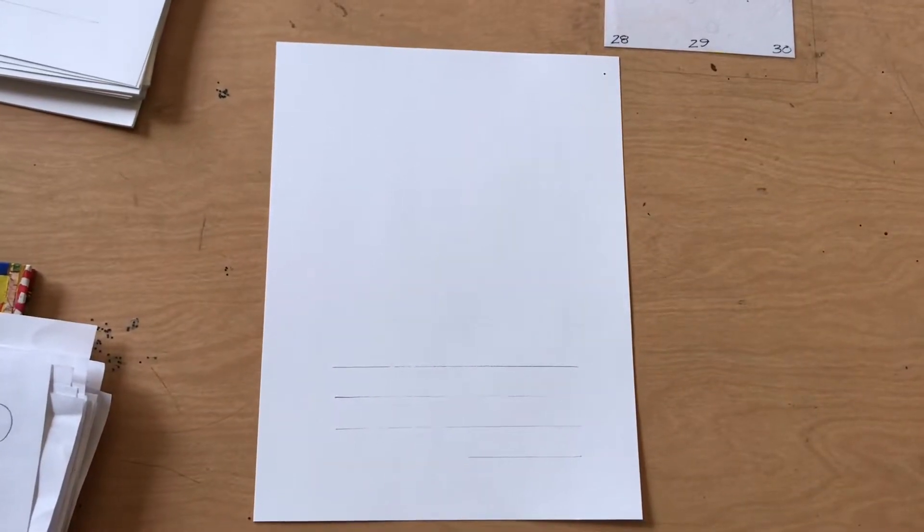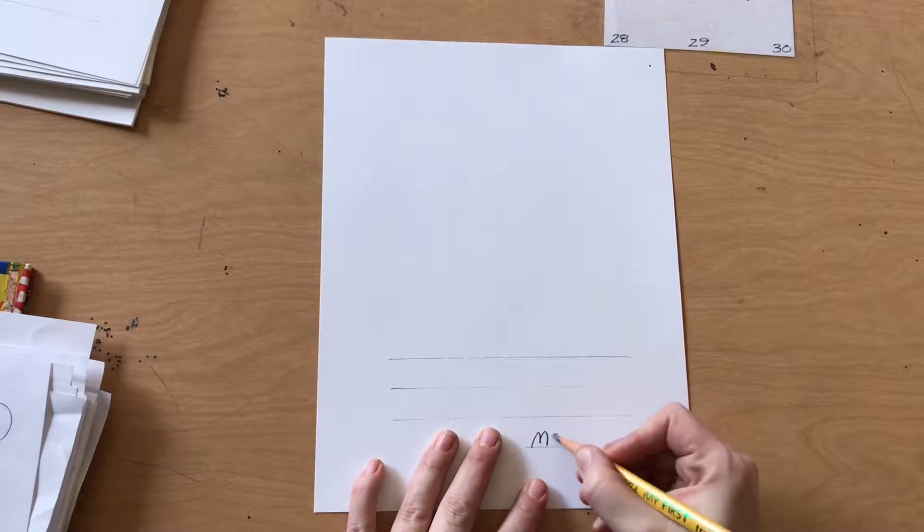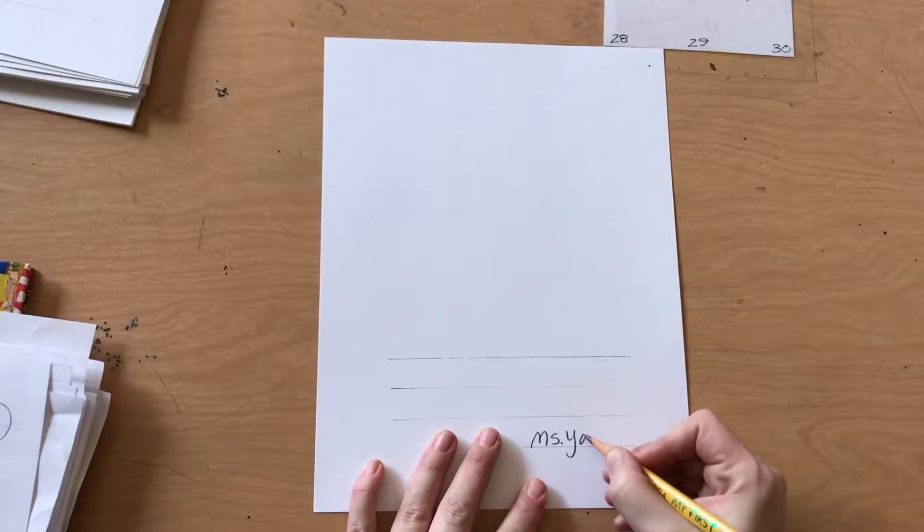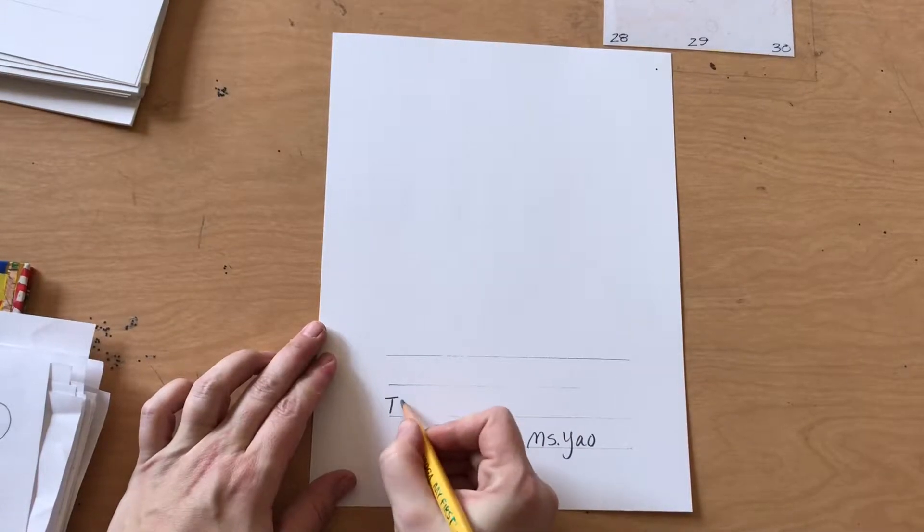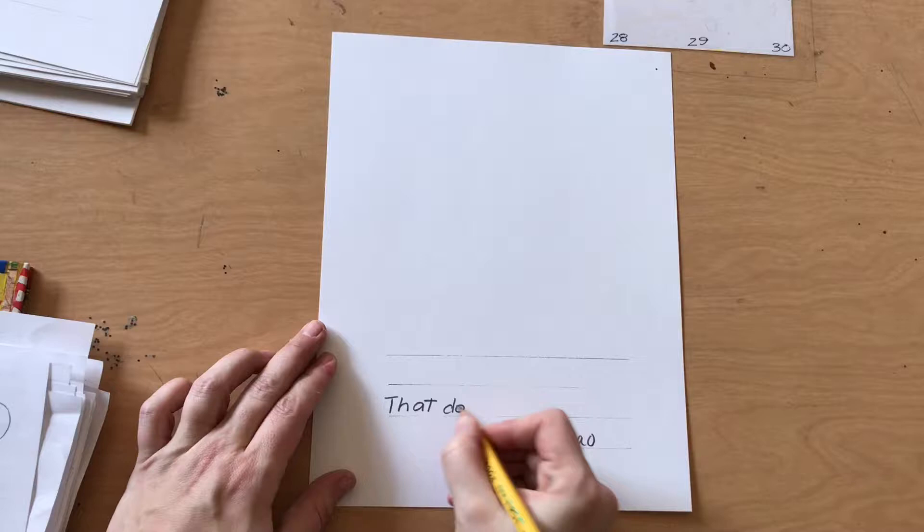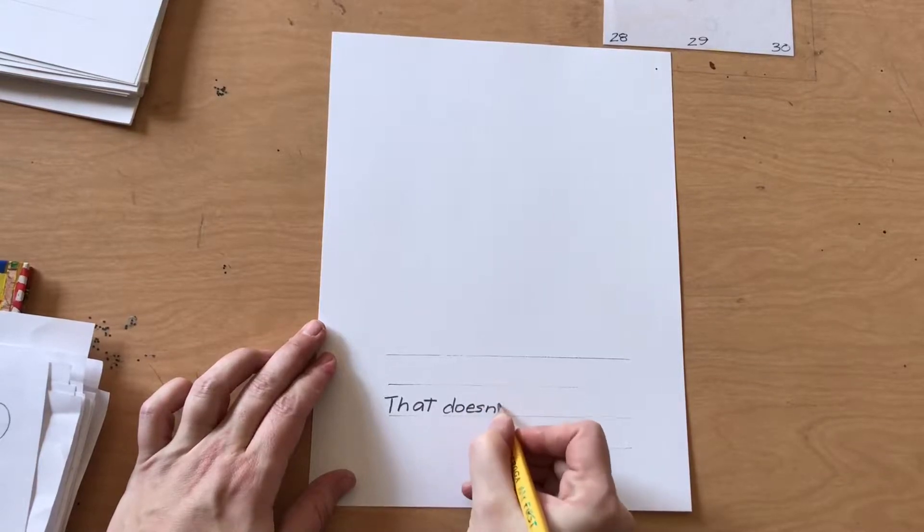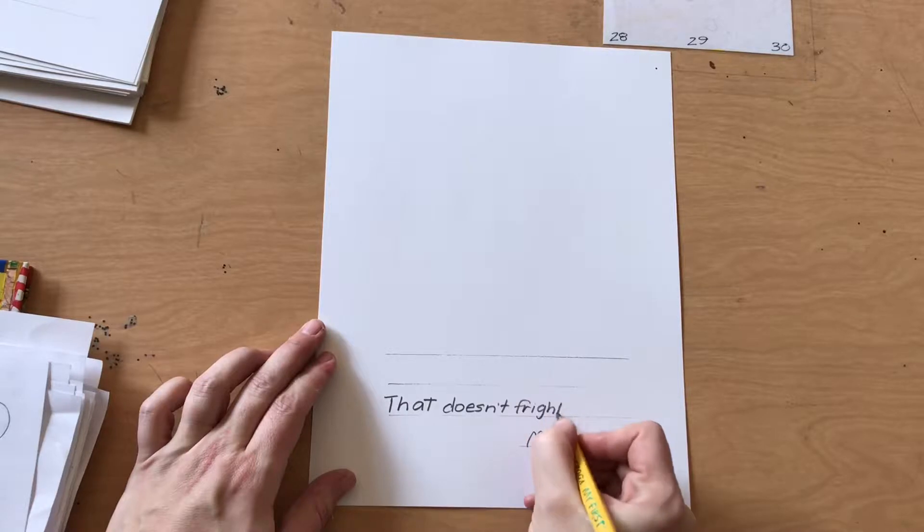We're going to start this poem at the bottom. First you write your name in the bottom corner. Then you're going to write the last line of your poem. The last line for all of us is going to be, that doesn't frighten me at all.